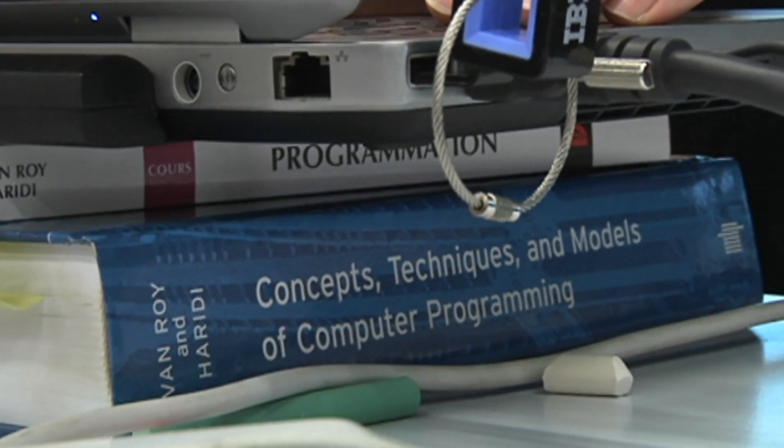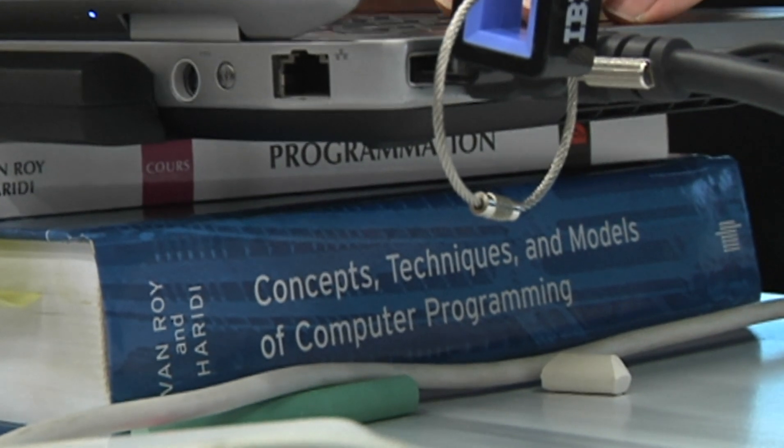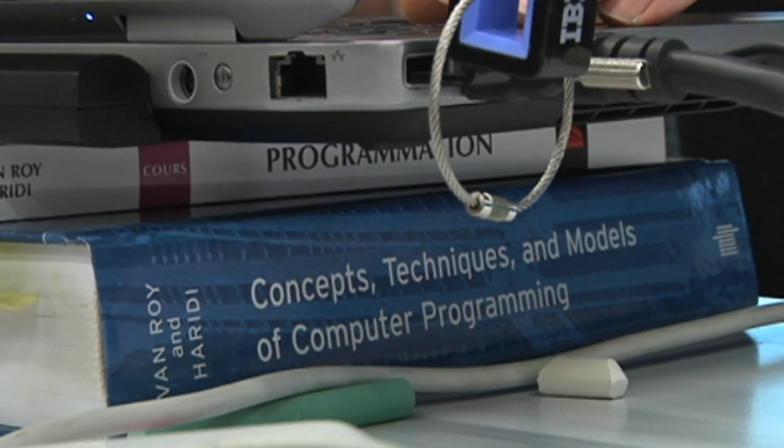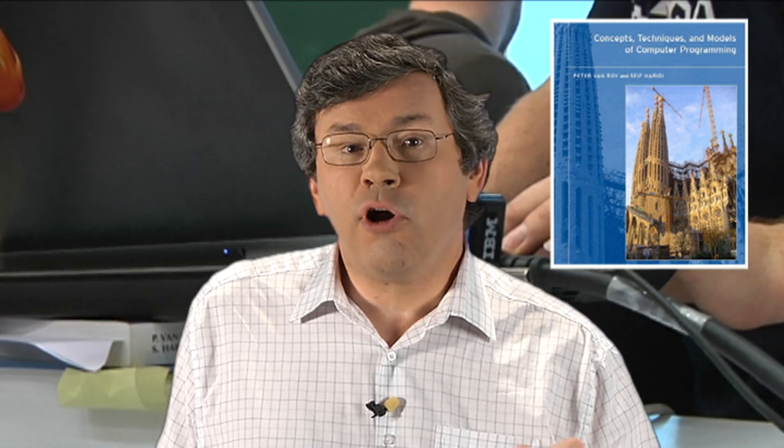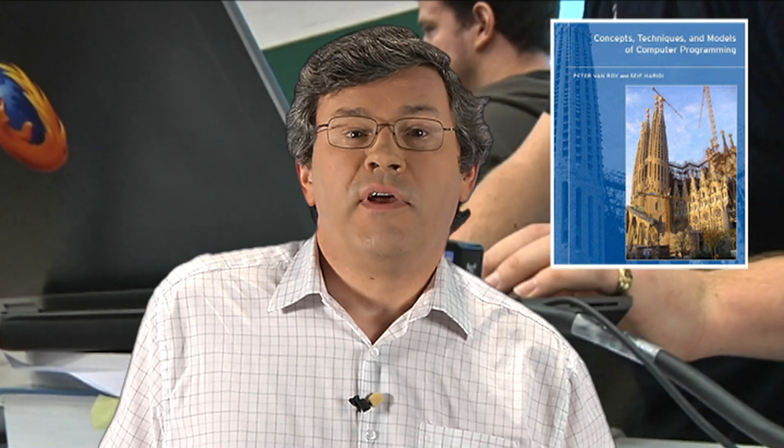The textbook for this course is Concepts, Techniques and Models of Computer Programming, written by myself and by Saif Haridi, published in 2004 by MIT Press. This book is still popular now in 2013, which is quite unusual for a programming book.